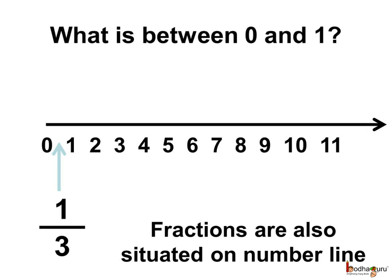There is a gap between two neighbouring integers, say between 0 and 1. What are these numbers? Between two integers, there are fractions. Like, 1 by 3 is situated between 0 and 1 as 1 by 3 is greater than 0 but less than 1.